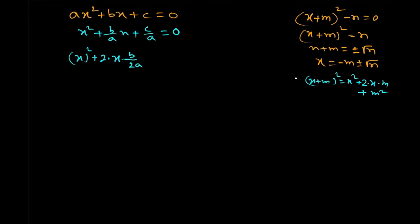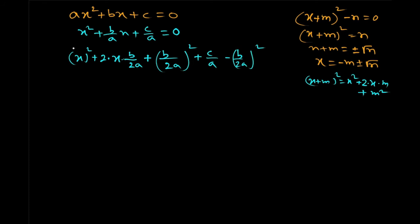We have rearranged this so that we can keep it in the perfect square form. We forcefully introduce the square of the second term, which is b divided by 2a, all squared. Since we have added this term, we must also subtract it, along with c by a. So practically we have not changed the polynomial — it is still equal to 0.